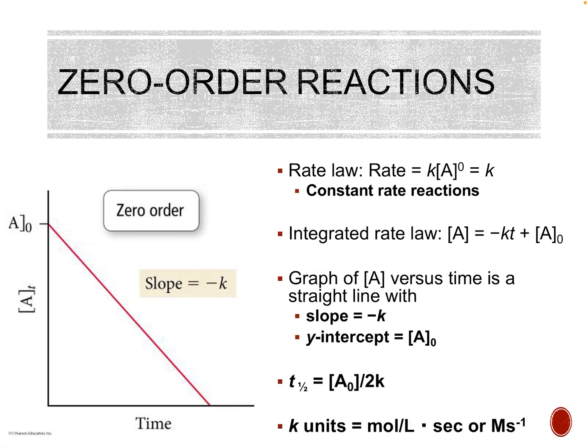If we have a zero-order reaction, that means our concentration and time are going to be directly proportional — we're going to get a nice straight line. These are constant rate reactions where the concentration has no impact on the reaction whatsoever. Remember, anything to the zero goes to one. A to the zero is just one. So rate is directly proportional to our rate constant K. It doesn't matter what our concentration is — you can double it, triple it, and it's not going to change the rate.